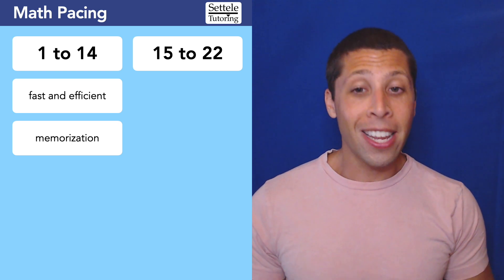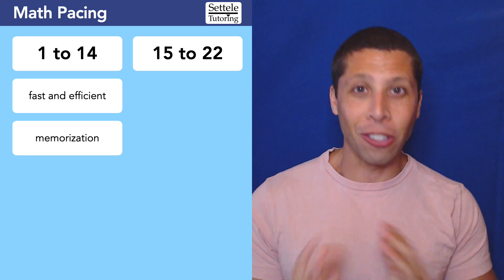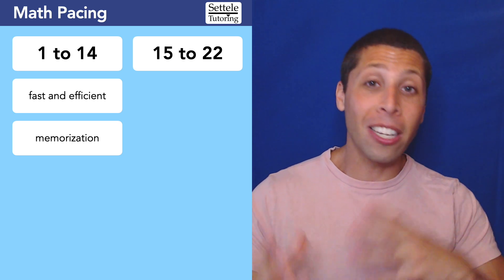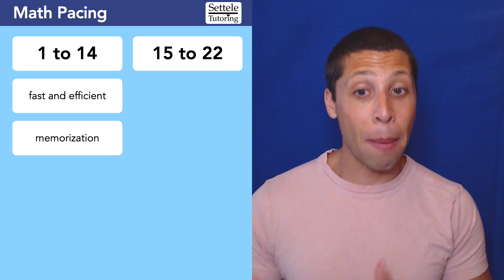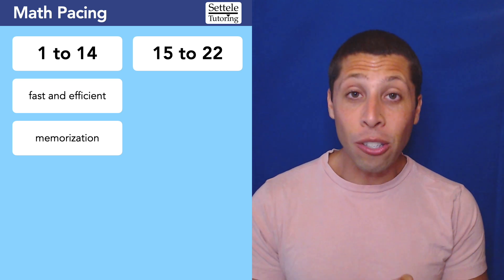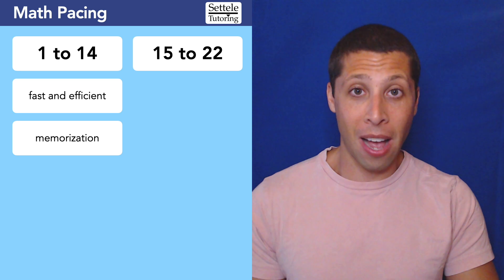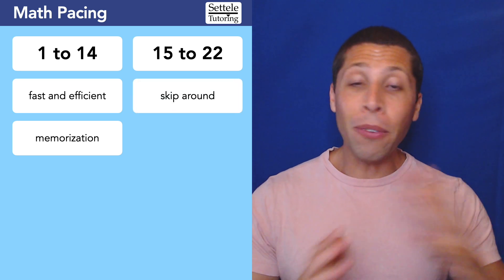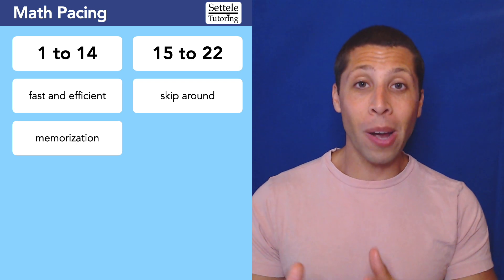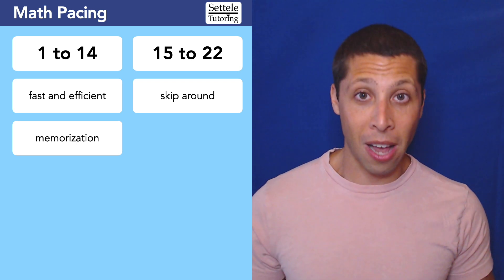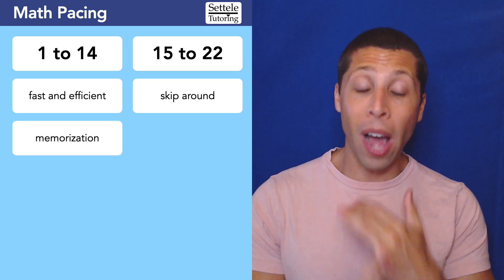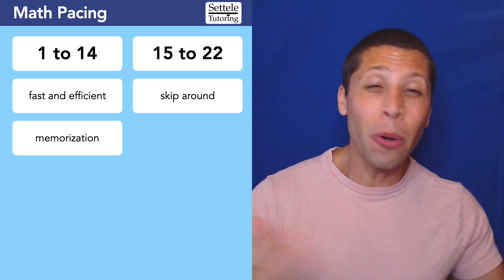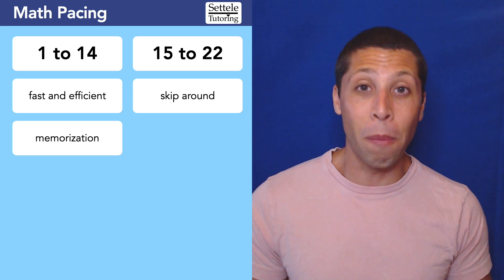Then when you get to question 15, that's when things are going to start to take a turn. You might even notice it right away that around question 15, maybe 16, it's going to start to get harder, and we have to start worrying about trap answers as well. These questions will take more time, but we can maximize our points by skipping around. Don't be afraid to go out of order here. Basically, as soon as you see a question, you're going to determine whether it is worth your time. If it is a topic that you do not know very well, skip it and come back to it. If it's going to take you a long time, even if you know exactly how to solve it, but you just know it's going to take you three or four minutes, skip it and come back to it.